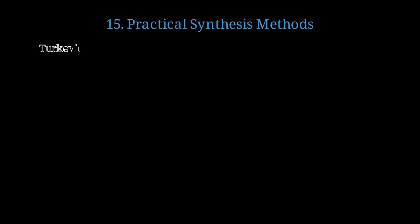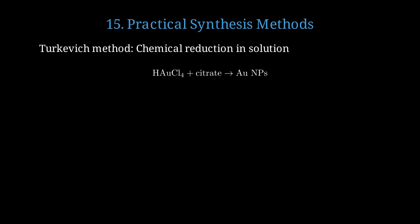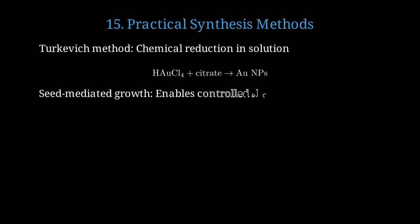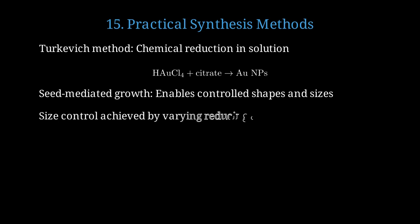How do we actually make these nanoparticles with precise control? The Turkevich method uses chemical reduction in solution to create spherical nanoparticles with good size control. Gold chloride is reduced by citrate to form gold nanoparticles, with citrate acting as both reducing agent and stabilizer. Seed-mediated growth starts with small seed particles and grows them to desired sizes and shapes, enabling precise control over nanorods and other geometries. Size control is achieved by carefully varying the concentration of reducing agent, temperature, and reaction time.